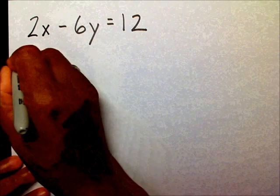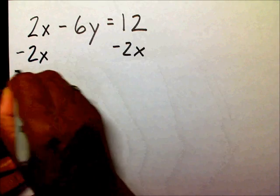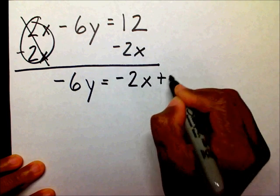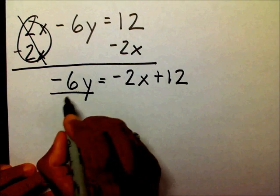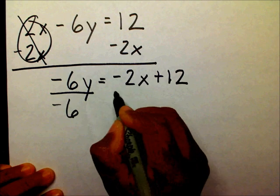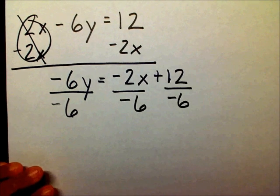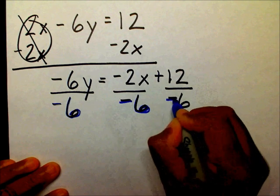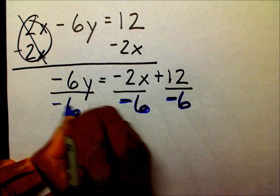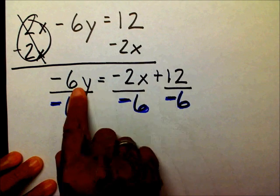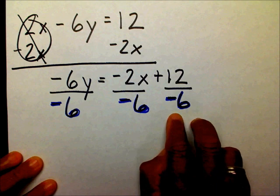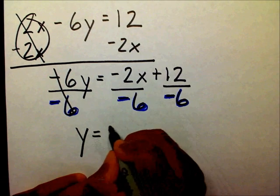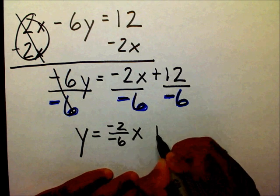I'm going to subtract 2x on both sides. They're going to cancel, leaving negative 6y equals negative 2x plus 12. Then I'm going to divide every term by negative 6. The negative 6s are going to cancel, leaving y equals negative 2 over negative 6 times x plus 12 over negative 6.